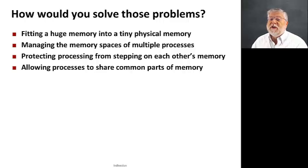First problem is we have to fit a huge memory address space into a tiny physical memory. Again, physical memory does not have 16 exabytes of space. Typically, it's just a few gigabytes. So how do we think about that? Then, how do we manage the memory spaces for multiple processes, make the problem even harder? Now, it's not just 16 exabytes, but it's 16 exabytes for each process. And then, how do we protect processes from stepping on each other's memory? At the same time, we want to allow processes to share common parts of memory so that we can be more efficient with this little physical memory that we do have.